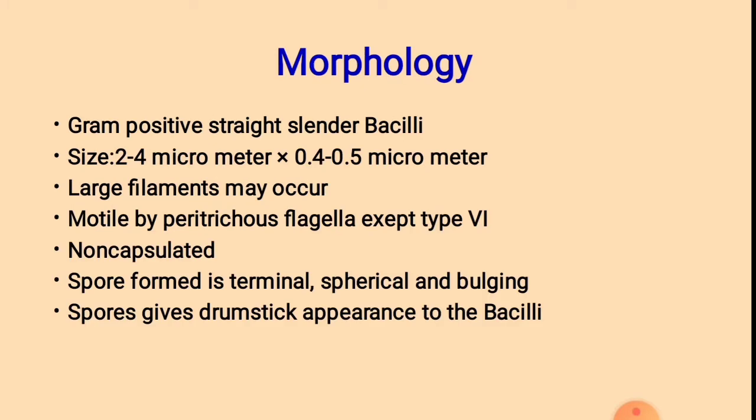Morphology: Clostridium tetani is a gram-positive bacillus. The size is 2 to 4 micrometres in length and 0.4 to 0.5 micrometres in breadth. Large filaments may occur. It is motile by peritrichous flagella except type 6. It is non-capsulated and a highly spore-forming organism. The spore formed is terminal, spherical, and bulging, giving a drumstick appearance to the bacillus.